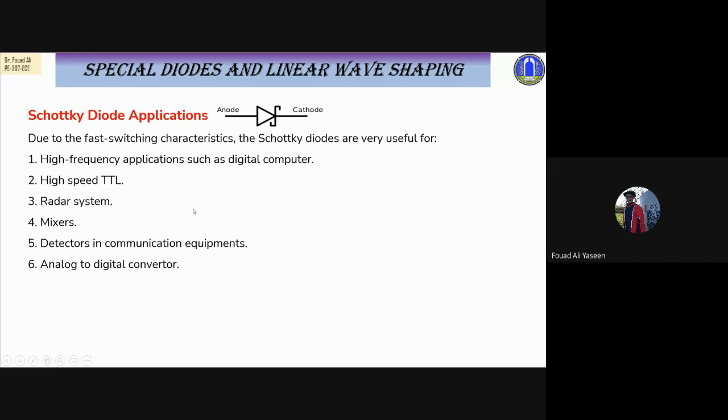After that there is transistor-transistor CMOS logic. We can see that for every high speed application, the Schottky diode should be used because it has fast recovery and low voltage.